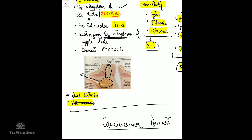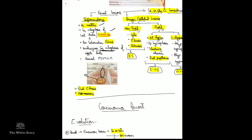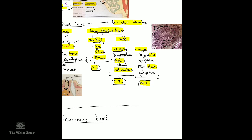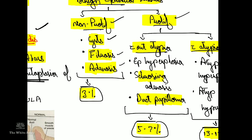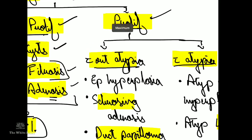Fat necrosis occurs secondary to trauma. Benign epithelial lesions can be classified into non-proliferative and proliferative lesions. Under non-proliferative lesions are cysts, fibrosis, and adenosis. In cysts, there is multiple dilation of lobules, and many such dilated lobules coalesce to form one large cyst. Fibrosis occurs when secretions discharge and cause a chronic inflammatory reaction followed by fibrosis. Adenosis is an increase in the number of acini per lobule, usually occurring in pregnant women but also in non-pregnant women.